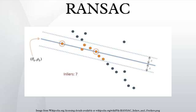Example: A simple example is fitting of a line in two dimensions to a set of observations. Assuming that this set contains both inliers, that is, points which approximately can be fitted to a line, and outliers, points which cannot be fitted to this line.